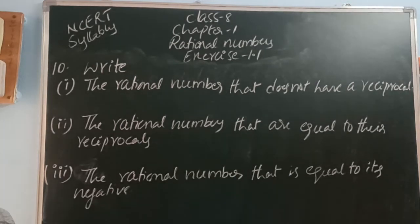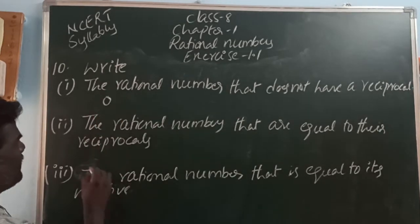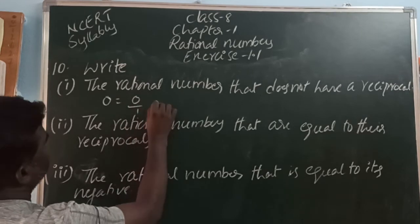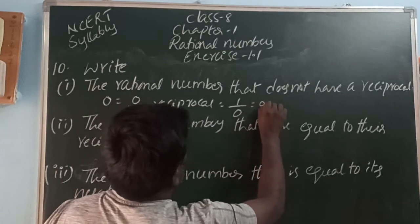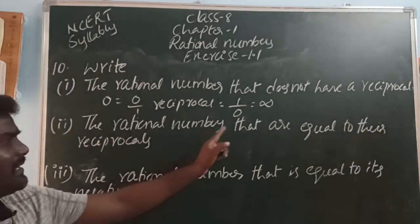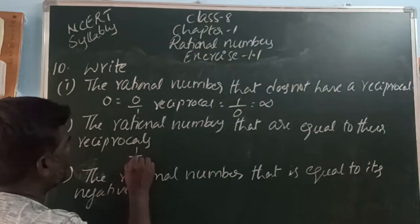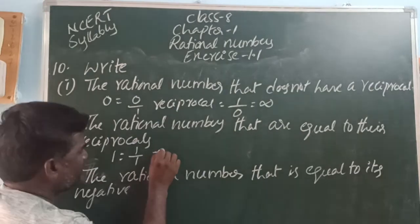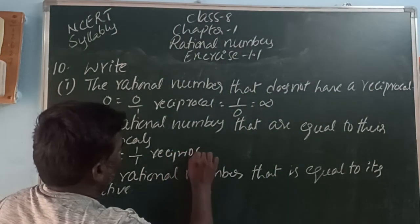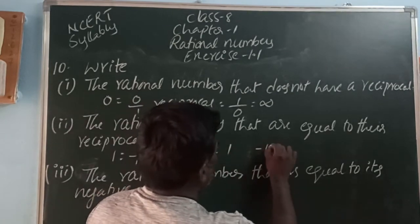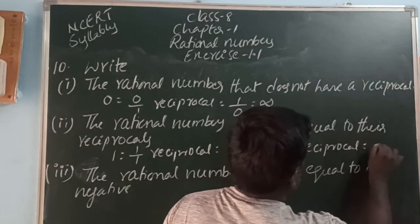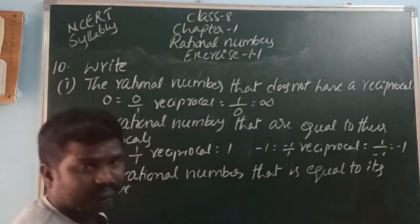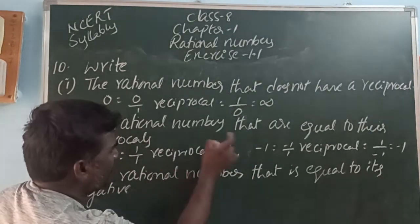The rational number that does not have a reciprocal is 0, because 0 can be written as 0 by 1 and its reciprocal would be 1 by 0, which is undefined. The rational numbers that are equal to their own reciprocal are 1 and minus 1. For 1: written as 1 by 1, its reciprocal is 1. For minus 1: written as minus 1 by 1, its reciprocal is 1 by minus 1 equals minus 1. So there are two such numbers: 1 and minus 1.